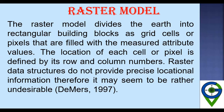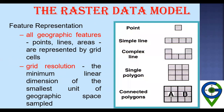The location of each cell or pixel is defined by its row and column numbers. Because raster data structure does not provide precise location information as vector does, it may seem rather undesirable. In raster, all geographic features — points, lines, and areas — are represented by grid cells. Grid resolution refers to the minimum linear dimension of the smallest unit of geographic space sampled.